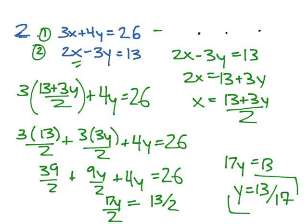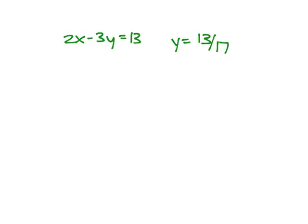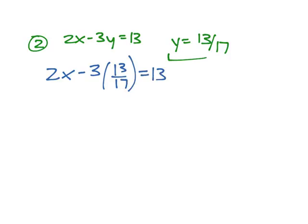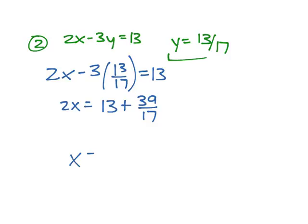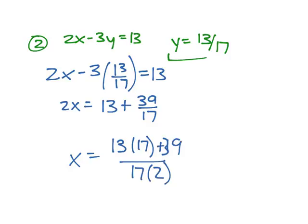From here, we can solve for x. Taking the second equation with our y value substituted in: 2x minus 3 times (13 over 17) is equal to 13. That's 2x is equal to 13 plus 39 over 17, so x is equal to (13 times 17 plus 39) over (17 times 2). We can use our calculators to find the answer there.